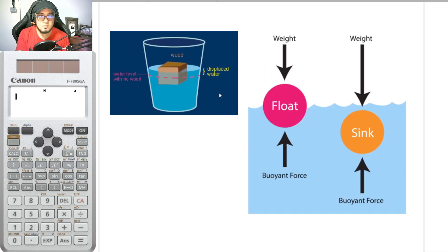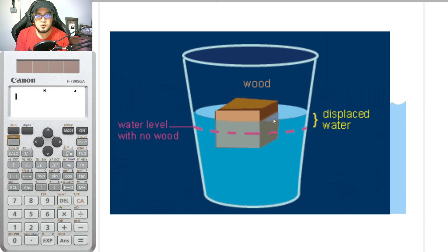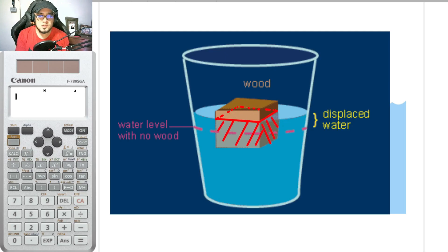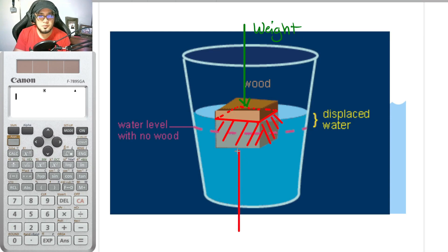Looking at the figure of a wood block on a glass of water — a part of the wood is submerged in water. Since wood is an object on earth, it has its own weight directed downward. The buoyant force acts upward according to Archimedes' principle.